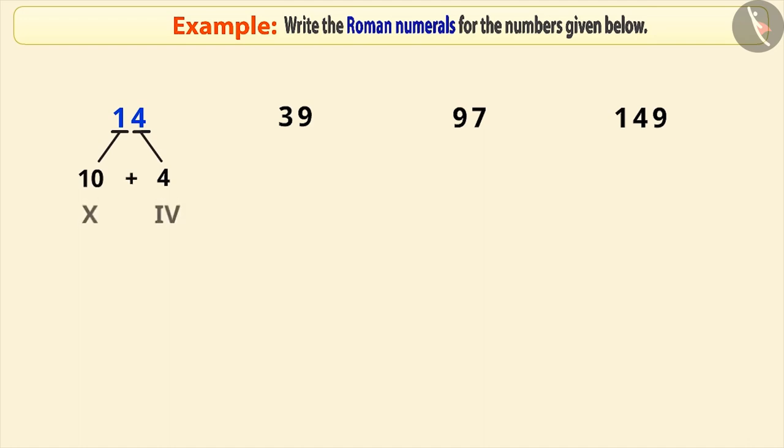Next, we write the Roman numerals for each place value and then we write them together. 39 is equal to 30 plus 9.